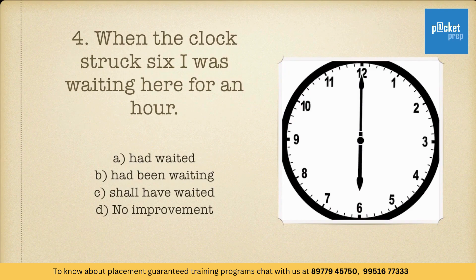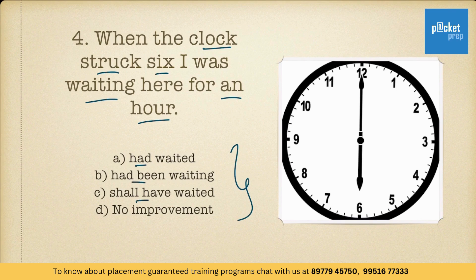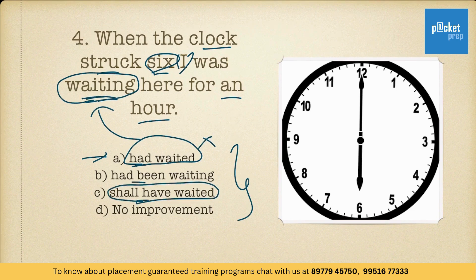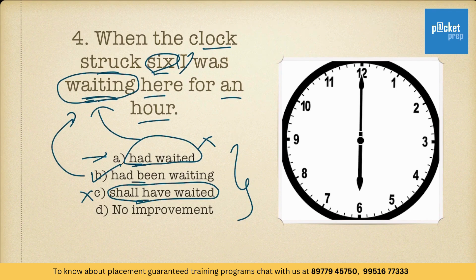Another one: When the clock struck six, I was waiting here for an hour. The options are had waited, had been waiting, shall have waited, and no improvement required. Option A, had waited, is wrong because in the question the person is still waiting. Shall have waited is also grammatically incorrect. Looking at option B — When the clock struck six, I had been waiting here for an hour — this sounds meaningful and correct. Therefore, the answer is B.